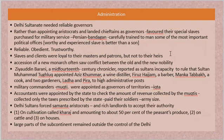The tax on cultivation was called Kharaj, amounting to 50 percent of the peasant's produce. There was also a tax on cattle and a tax on houses, as these were considered assets. Large parts of the subcontinent remained outside the control of Delhi — looking at a map, the Delhi Sultanate was only in central India; the east, west, north, and south were mostly outside its control.